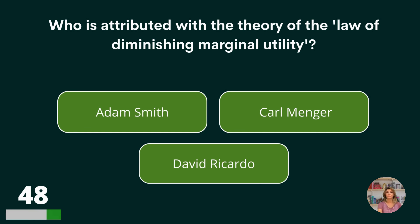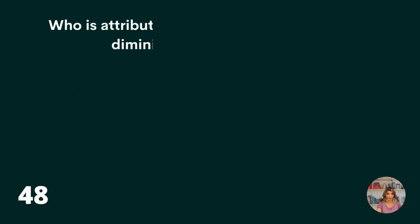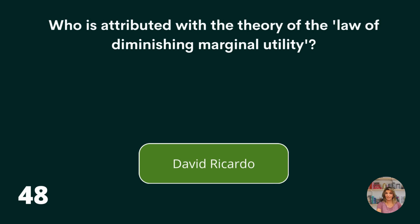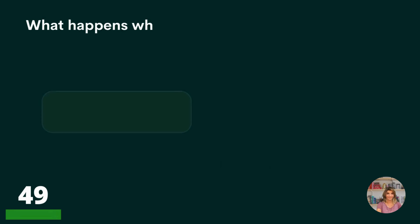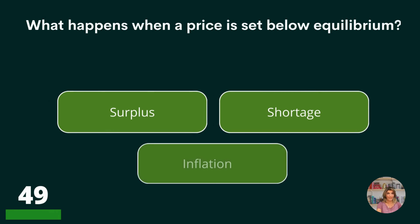Who is attributed with the theory of the law of diminishing marginal utility? Adam Smith, Carl Menger, or David Ricardo? David Ricardo.